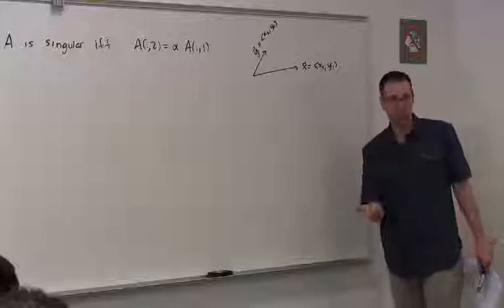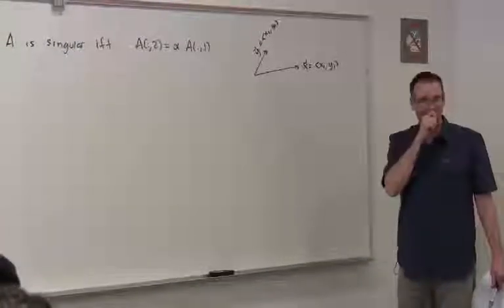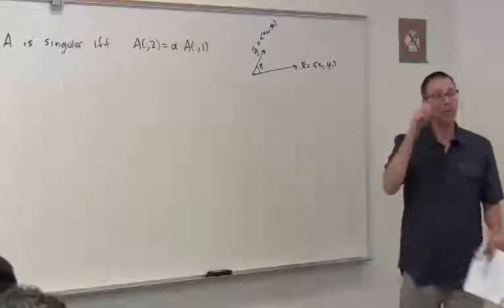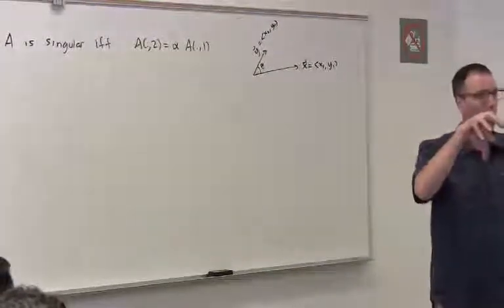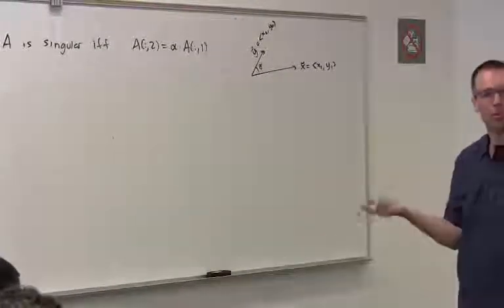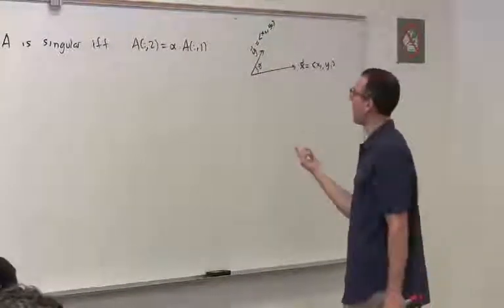I want a measurement of perpendicularity. And I want my measurement of perpendicularity to be zero when they are least perpendicular, and non-zero when they are most perpendicular. Do you remember what that was?